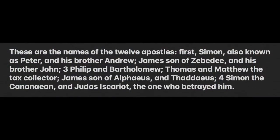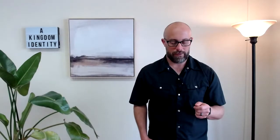This is first, Simon, also known as Peter, and his brother Andrew, James, son of Zebedee, and his brother John, Philip and Bartholomew, Thomas and Matthew, the tax collector. James, son of Alphaeus and Thaddeus, Simon, the Canaanian, and Judas Iscariot, the one who betrayed him. There are other translations that translate Simon, the Canaanian, as Simon, the Zealot. It was a word that was used in some ways interchangeably.